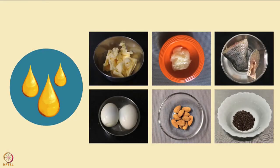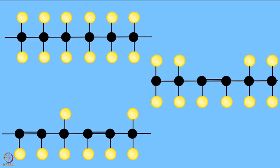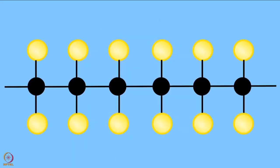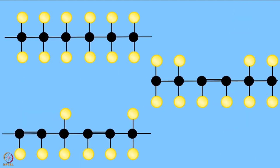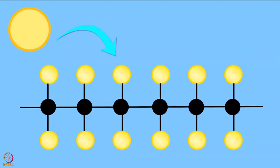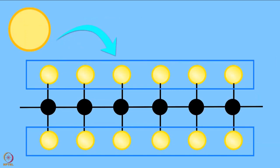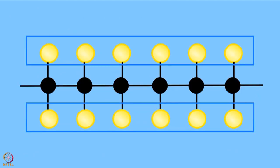Now let's move on to fats. The basic building blocks of fat are fatty acids. Fats are made up of carbon and hydrogen joined together in long chains called hydrocarbons. The structure of the fat will affect how it behaves in our bodies. The level of saturation affects the structure of a fat. Saturation refers to the amount of hydrogen bonded to a hydrocarbon chain. The more hydrogens bonded, the more saturated the fat is.